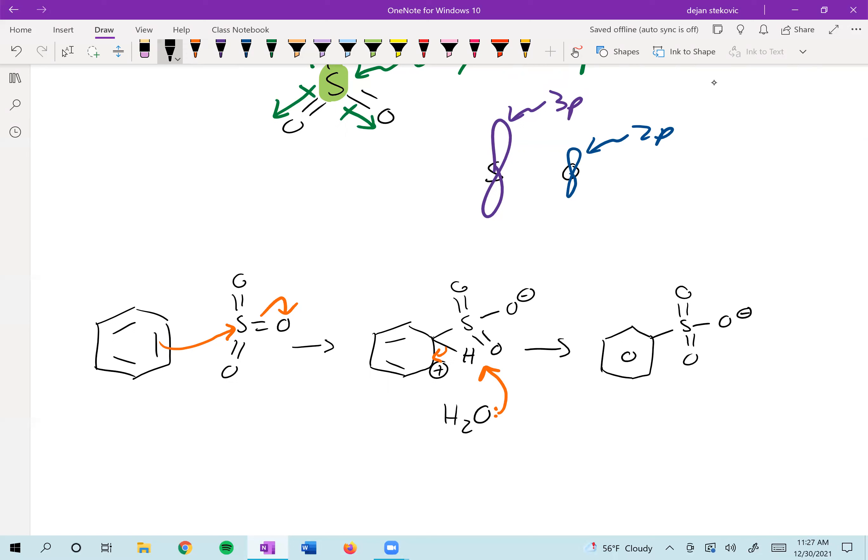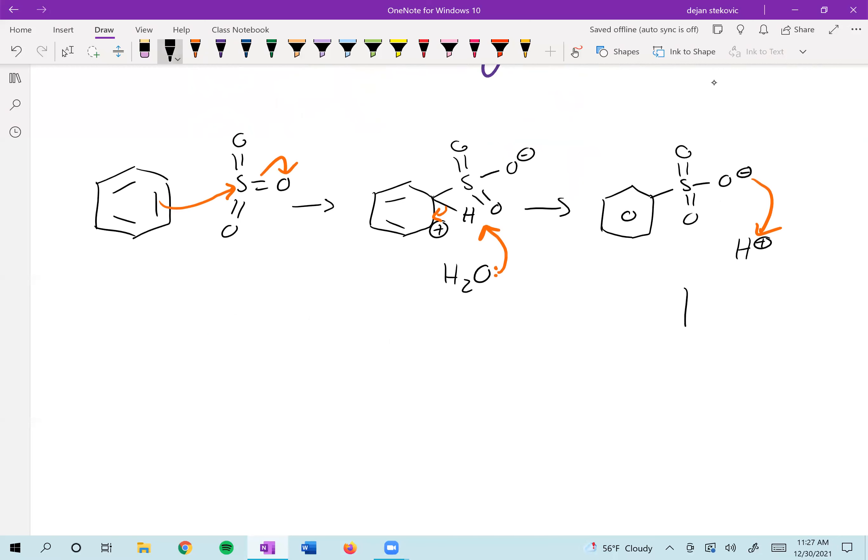And then we just protonate our SO3 with just an acidic proton. You can draw this coming from the sulfuric acid or you can just draw H+ to represent the sulfuric acid. Either one is fine, and then we have our final product—we have it sulfonated.